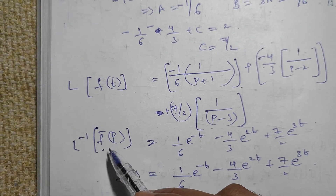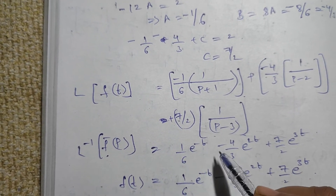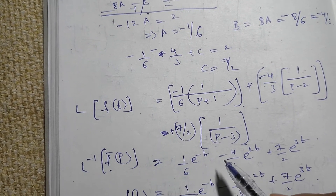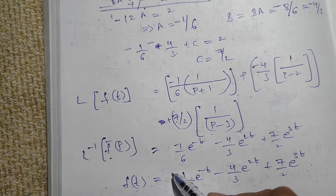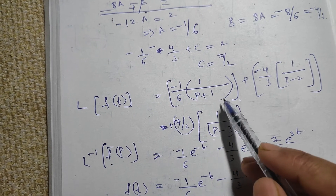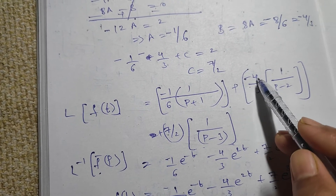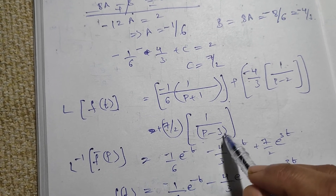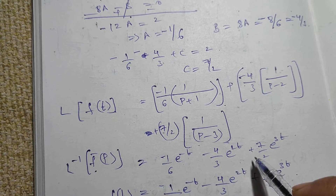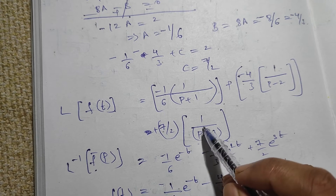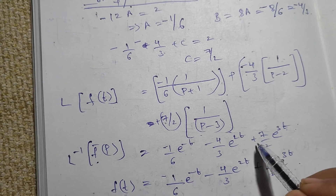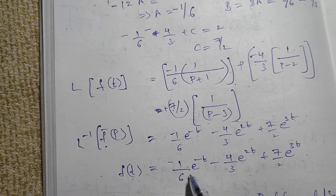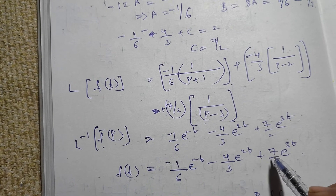Taking the inverse Laplace transform, the inverse Laplace of 1/(p+1) is e^(-t), the inverse Laplace of 1/(p-2) is e^(2t), and the inverse Laplace of 1/(p-3) is e^(3t). Therefore our function f(t) equals (-1/6)·e^(-t) - (4/3)·e^(2t) + (7/2)·e^(3t).